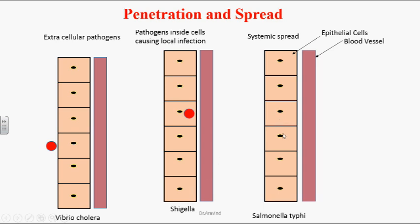The third type is systemic spread of organisms. The organism enters the human body, enters the epithelial cell, enters the bloodstream, and spreads all over the body, so lesions can be seen anywhere. The best example is Salmonella Typhi — the organism enters the human body, enters the epithelial cell, then enters the bloodstream and spreads all over the body.